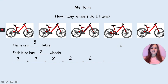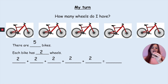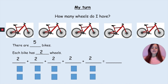So our number sentence looks like this: two add two add two add two add two equals. And remember, instead of counting them all individually, we are going to count in twos: two, four, six, eight, ten. We have ten wheels.